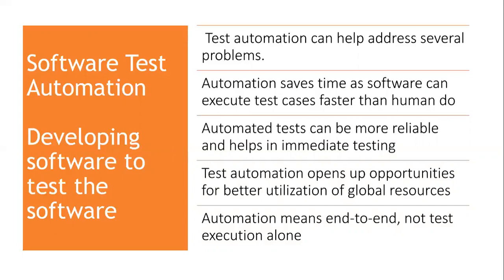Whenever a test engineer executes a particular test case many times, there is a chance for human error, because of which some repeats may occur. So in that case automation can be more reliable. Next is immediate testing — automation reduces the time gap between development and testing activities by creating scripts that should be executed as soon as the product build is ready.